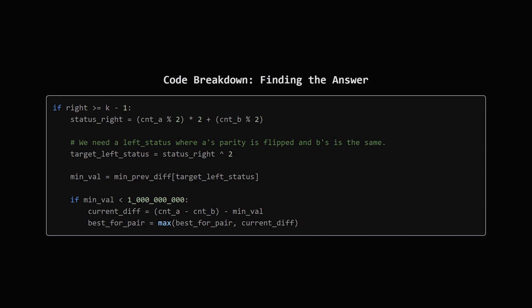Finally, inside the loop, we put it all together. Once our window is potentially long enough, which happens when right is at least K minus 1, we can check for an answer. First, we determine the parity state of our current prefix ending at right. Then, we figure out what the target state for our left prefix needs to be. Remember, we need to flip the parity of A and keep the parity of B the same. We look up this target state in our table to find the best value we've recorded for it so far. If we found one, we can calculate our potential score. We take the difference value at our right pointer and subtract the best difference value we found for our left pointer. This gives us a score for a valid substring, and we update our best answer if this new score is better.